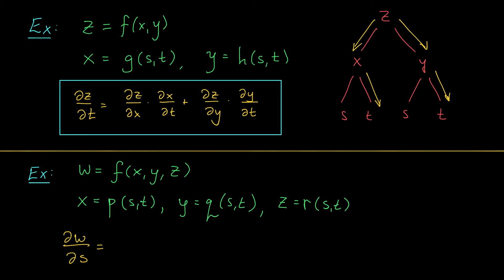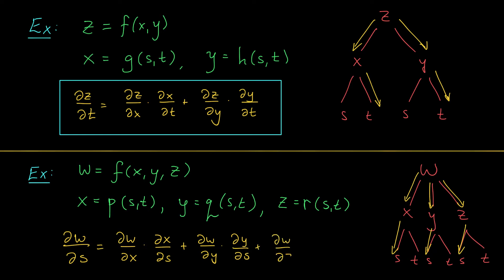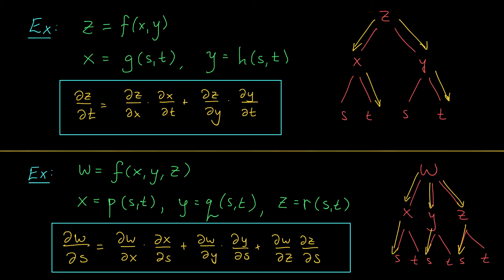What if instead we had a function w that depended on three variables x, y, and z, and each of these variables depended on two independent variables, s and t? No tricks here — we do it in exactly the same way. Start with the tree diagram: w is at the top, x, y, and z are at level two, and s and t are at the bottom. Each variable depends on s and t. In this question, we're looking for the partial derivative of w with respect to s. We follow every branch of our tree that leads from w to s, taking derivatives as we go, and when we switch branches we add the result. So we get partial w by partial x times partial x by partial s, plus partial w by partial y times partial y by partial s, plus partial w by partial z times partial z by partial s. Lots of partials, but we didn't have to remember any formula — the tree diagram told us how to find the derivative.